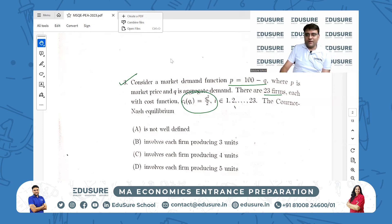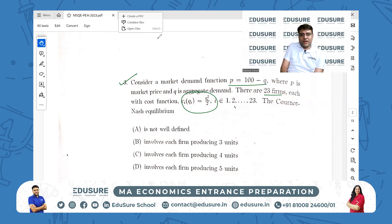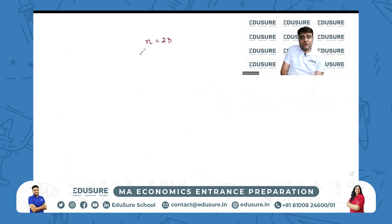We know that n = 23, p = 100 - q is the aggregate demand, and c = qi squared by 2. This capital Q is nothing but 23 times qi, because the cost function is the same for each and every firm.